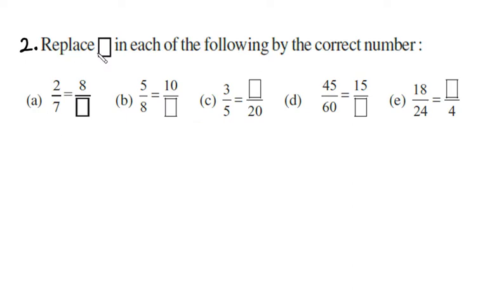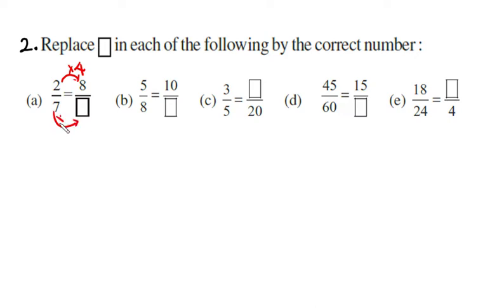Second example: replace the box in each of the following with the correct number. The equality sign means equivalent. So two sevenths is equivalent to eight over box. To go from two to eight in the numerator, we multiply by four. Because these are equivalent fractions, we also multiply the denominator seven by four, giving us 28. So the box value is 28.